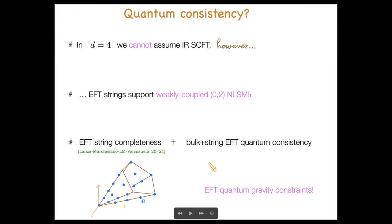Assuming this working assumption, and in combination with a completeness of the EFT string spectrum, then one can check the quantum consistency of this string and get some non-trivial quantum gravity constraints, which is what I will try to explain.